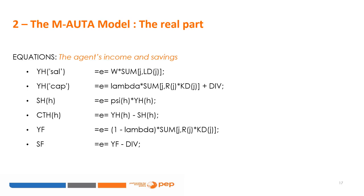Here we can see the agents' income and savings. Worker household YH_SAL receives only labour income. Capitalist household YH_CAP receives the lambda share of total capital income plus dividends from FIRM. Both types of households save SH, which is a PSI proportion of their income, and the remaining income is consumed as CTHH. FIRM receives YF — the remaining share of the total capital income — and its savings are what remain from its income after giving dividends to capitalist households.